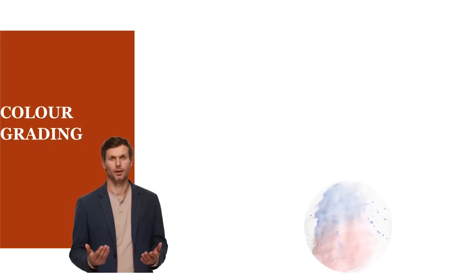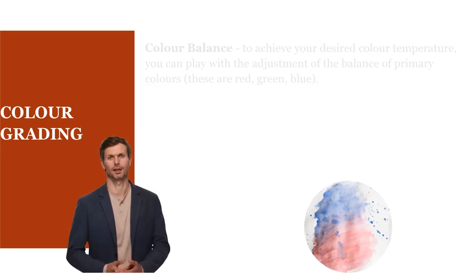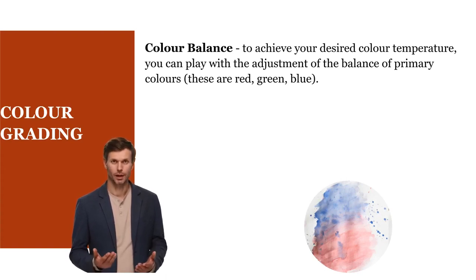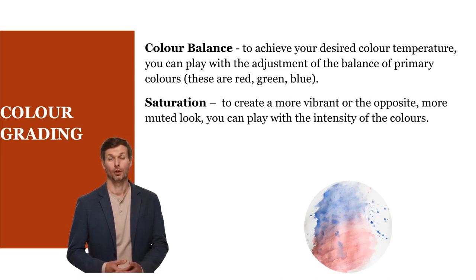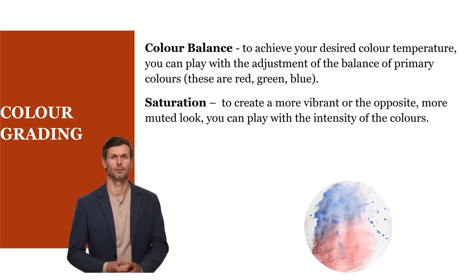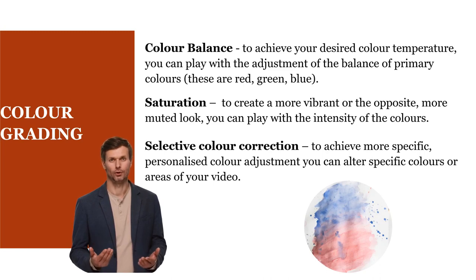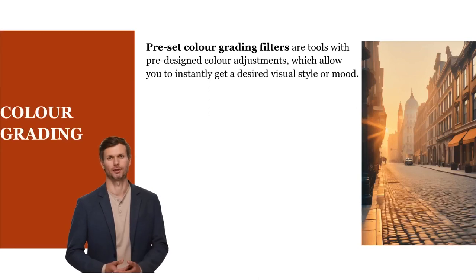Popular adjustments used in color grading include color balance — playing with the balance of primary colors (red, green, blue) to achieve a desired color temperature — and saturation, where you adjust the intensity of colors to create a more vibrant or more muted look. Selected color correction allows you to alter specific colors or areas of your video for more personalized adjustments.